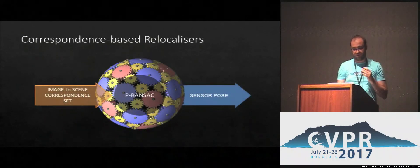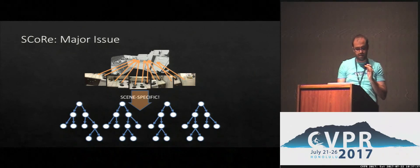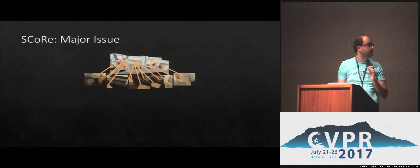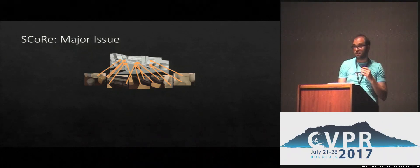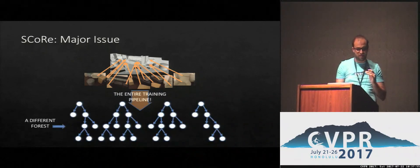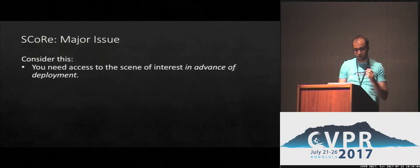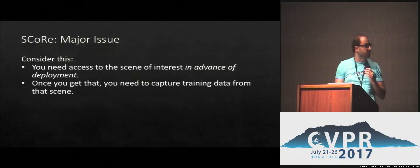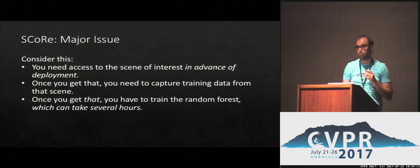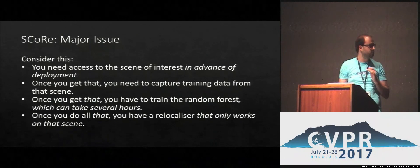With the forest trained, the rest of the relocalization tasks become mechanical, and we have solved the problem. But there is one more problem: the input to the forest training process was pairs of features associated with 3D locations in a very specific scene, so the trained forest is scene-specific. If we want to apply the same algorithm on a different scene, we have to train a new forest from scratch — running the entire training pipeline again to produce a completely different forest. To run a SCORE-based relocalizer on a new scene, we need access to it in advance, need to capture enough training data, and then train the forest — a process that could take several hours — just to end up with a relocalizer that only works in that specific scene.